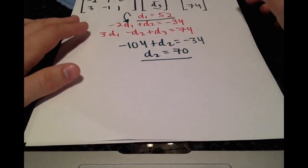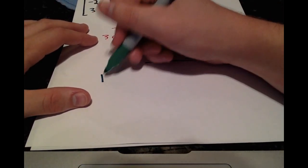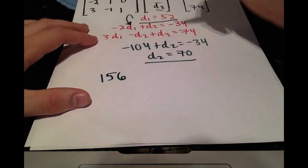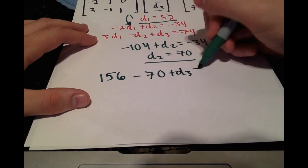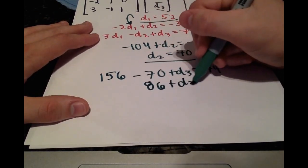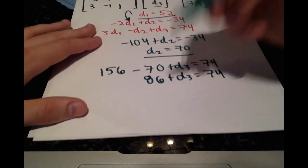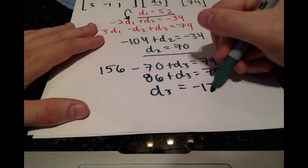And the final step to get d3, we'll substitute d1 and d2. We'll get 156 minus 70 plus d3 is equal to 74. Or 86 plus d3 equals 74, which means d3 must be equal to negative 12.